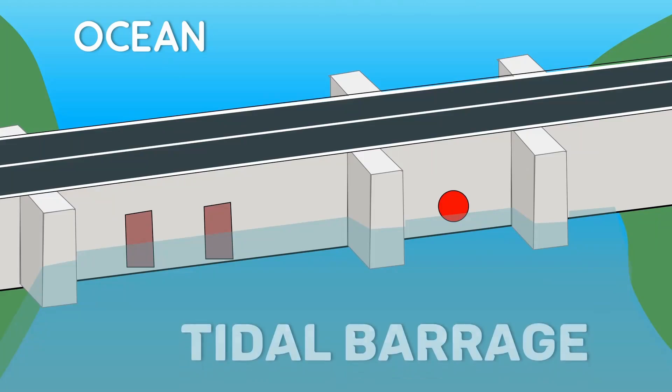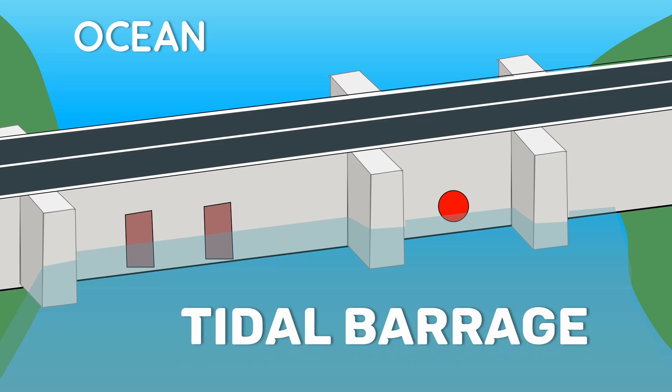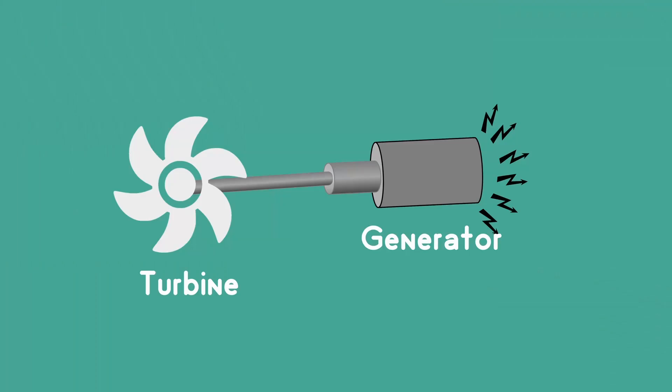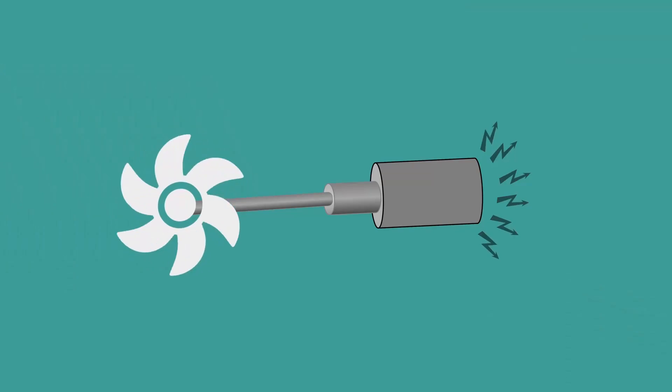There are many methods to capture energy from the tides and one of them is tidal barrage. Generally, power plants will have a turbine coupled with a generator. When the turbine spins, the generator generates electricity. The same technique is used here.